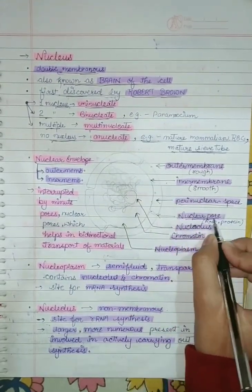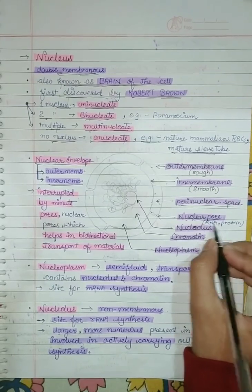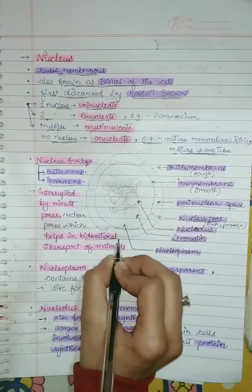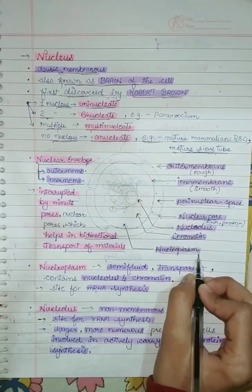And these nuclear pores are the passages through which movement of RNA and protein molecules take place in both directions, that is bi-directional transport of material. The nuclear matrix is known as nucleoplasm.